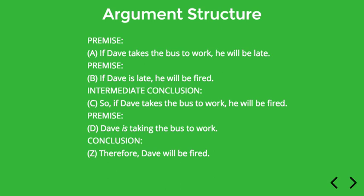A and B in this case are straightforward premises — information that is stated in order to get the argument going. If Dave takes the bus to work, he'll be late. If Dave is late, he'll be fired. Those are two independent pieces of information. Now C is kind of combining the information that you find in A and B, so in that sense C is not an independent premise. C is drawing out the logical connections between A and B, so it's not a premise. But it's also not the main thing we're trying to prove, which is that Dave is going to be fired. So it's a perfect example of what we call an intermediate conclusion.